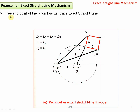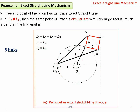The first exact straight line motion mechanism is the Peaucellier exact straight line mechanism. This mechanism consists of eight links. The links shown in red — link numbers five, six, seven, and eight — form a rhombus. Links AB, BP, PD, and AD are all of equal length, and point P on this rhombus will trace exactly a straight line in the vertical direction.